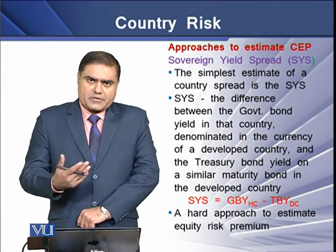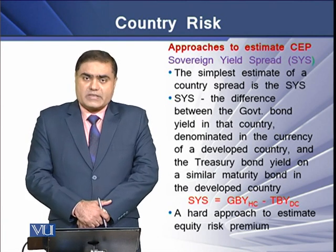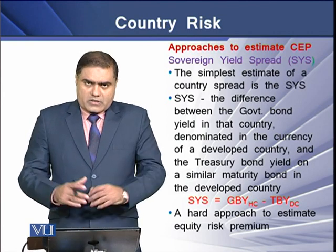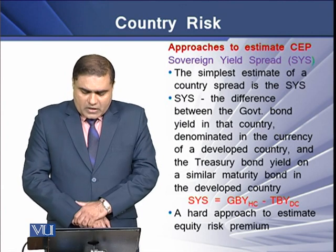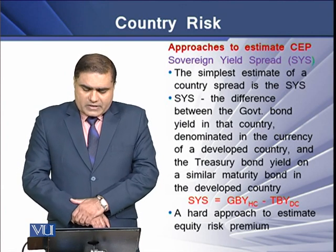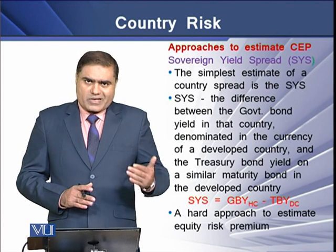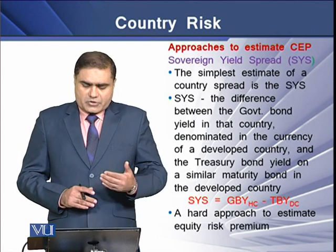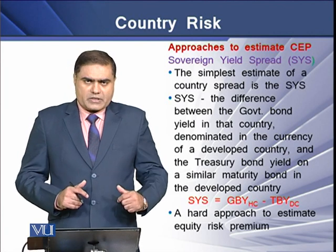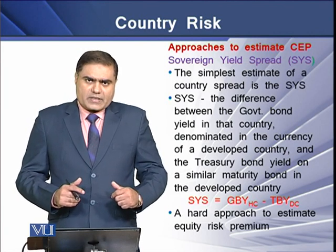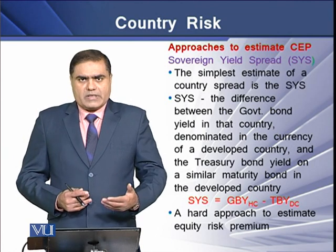To compute the country's equity premium (CEP), there are three different approaches. The first is the Sovereign Yield Spread (SYS), which is the simplest estimate of a country's spread. SYS is computed as the difference between the government bond yield in the developing country — denominated in the currency of a developed country — and the treasury bond yield on a similar maturity bond in the US. For example, if Pakistan is the home country, the reference developed country would be the US.